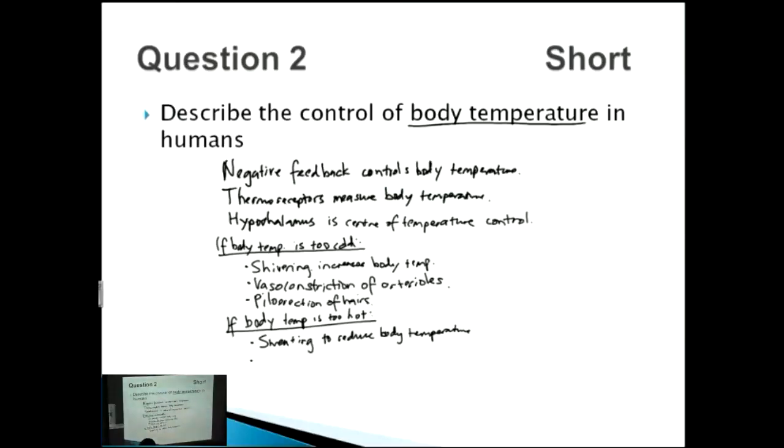Apart from sweating, there might be vasodilation of the vessels. This means that more blood will come to the top of your skin, which is why when you see someone who's been out in the sun very long, they're very red, usually unless they're sunburned. Vasodilation of arterioles reduces body temperature.